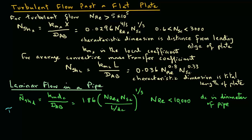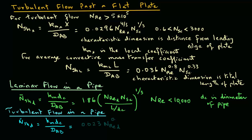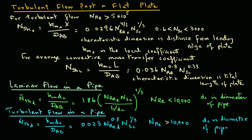For turbulent flow in a pipe, the Sherwood number equals 0.023 times Reynolds number raised to power 0.8, times Schmidt number raised to power 1/3. This is valid for Reynolds number greater than 10,000. Again, note that D_C is the inside diameter of the pipe.